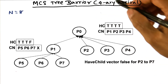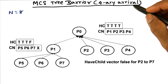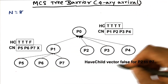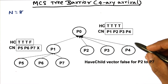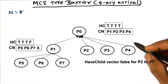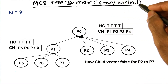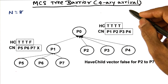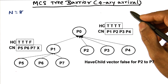The MCS tree barrier is also a tree barrier — it's a modified tree barrier. To make life simple, I'm showing you an arrangement of the MCS tree barrier with eight nodes. It's a four-ary arrival tree. The arrival tree and the wake-up tree are different in the MCS algorithm.